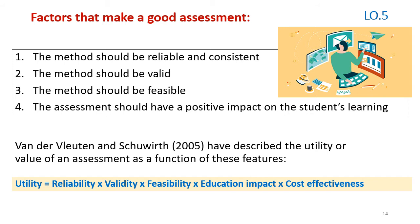Van der Vleuten, Gleeson and Schuwirth in 2005 described the utility or value of an assessment as a function of features: utility equals reliability multiplied by validity, multiplied by feasibility, and multiplied by impact, multiplied by cost-effectiveness.